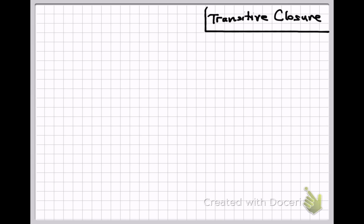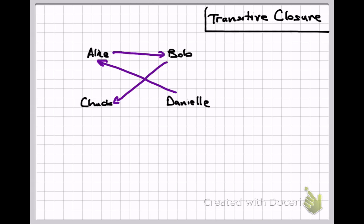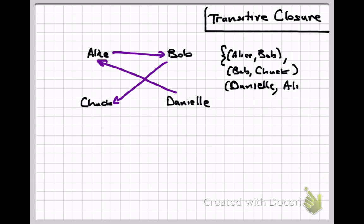Let's consider a small group of people who are on Twitter. Their names are Alice, Bob, Chuck, and Danielle. Alice follows Bob on Twitter, but not vice versa. Likewise, Bob follows Chuck, and Danielle follows Alice, but again not vice versa. Let's assume these relationships only go one way. We can think of the follows relation as a mathematical relation on a finite set, represented as a directed graph or as a set of tuples.